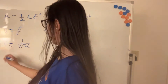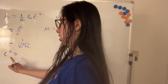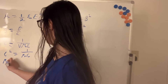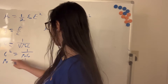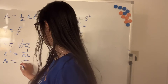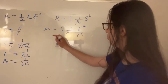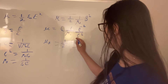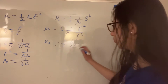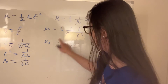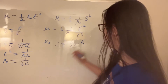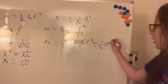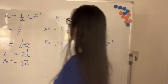Since C squared equals one over mu naught epsilon naught, we can write mu naught as one over epsilon naught C squared. So the magnetic energy density becomes one half of epsilon naught times the electric field squared — which is exactly the same as the electric energy density.